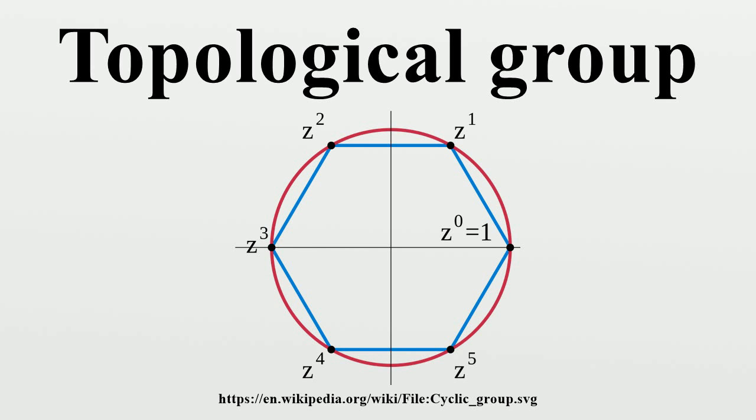while the right uniformity turns all right multiplications into uniformly continuous maps. If G is not abelian, then these two need not coincide.